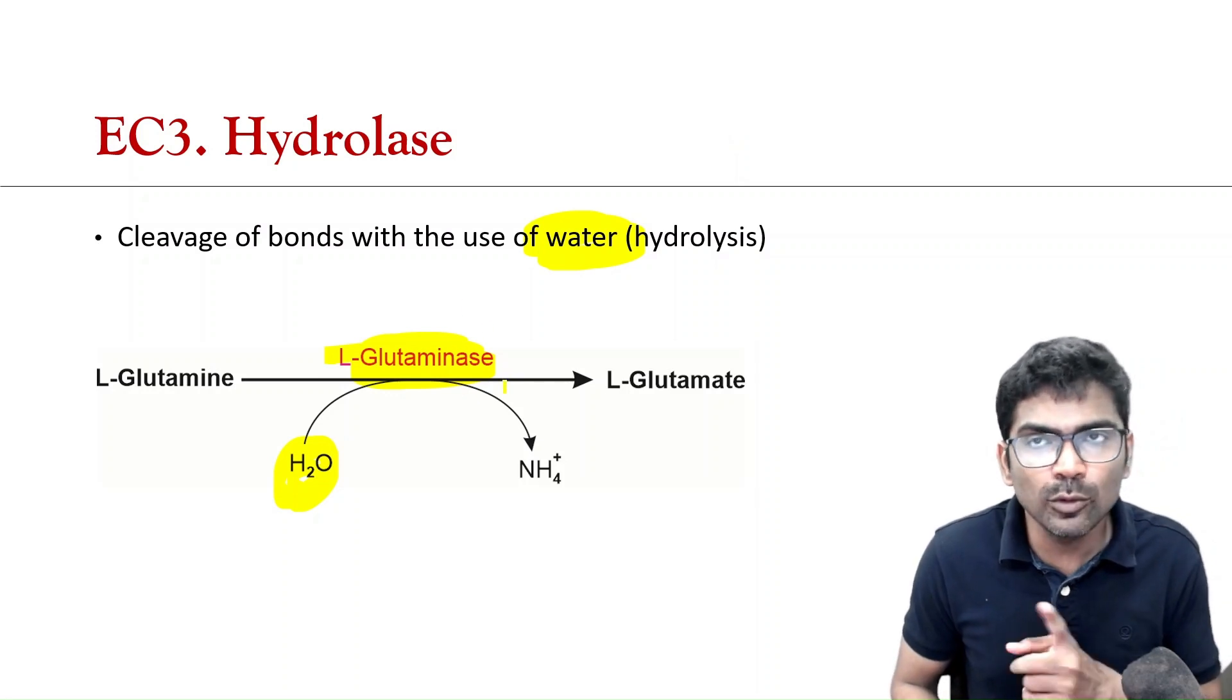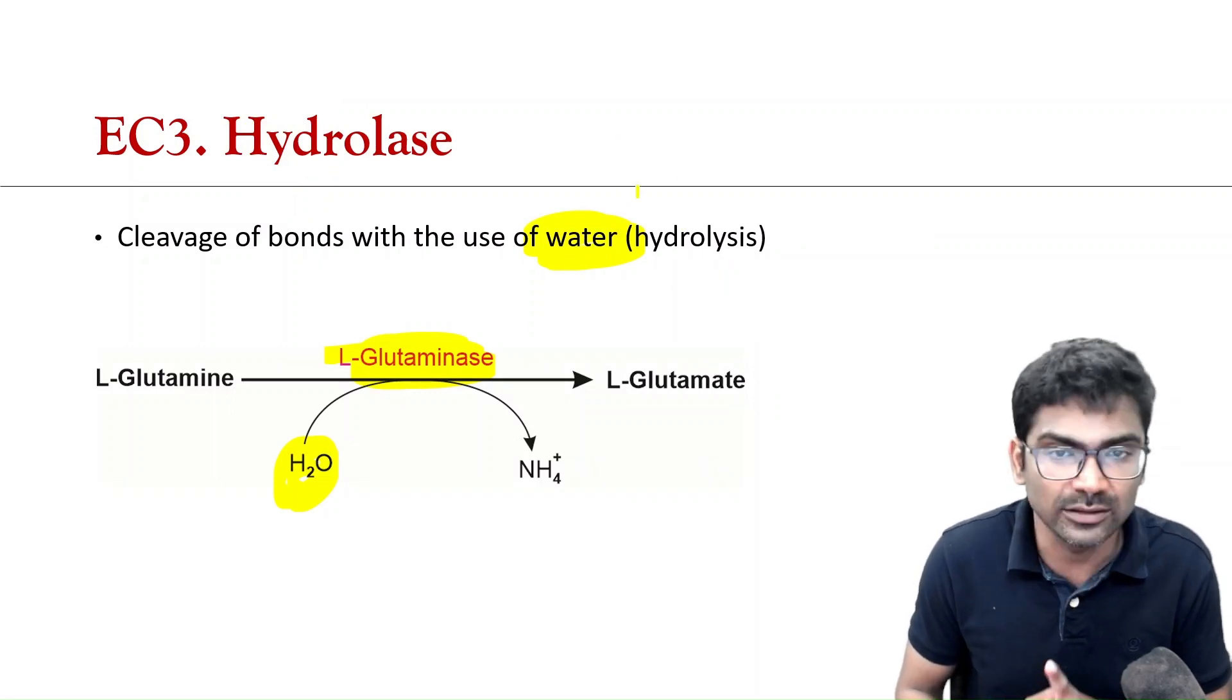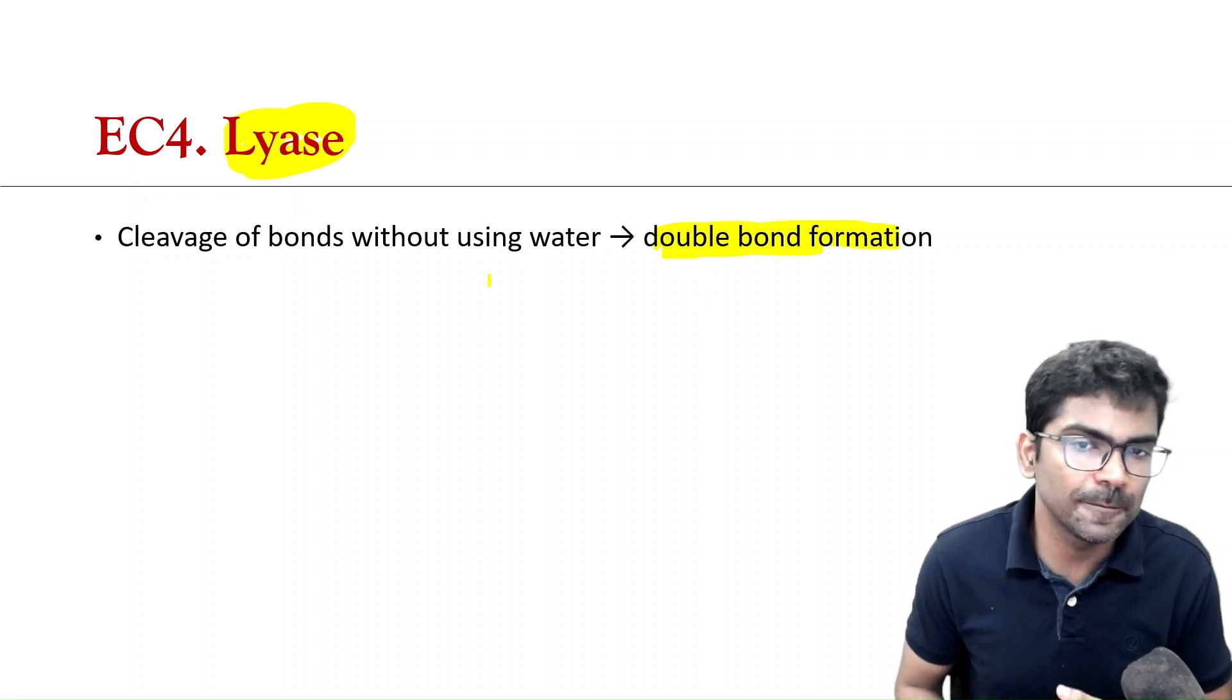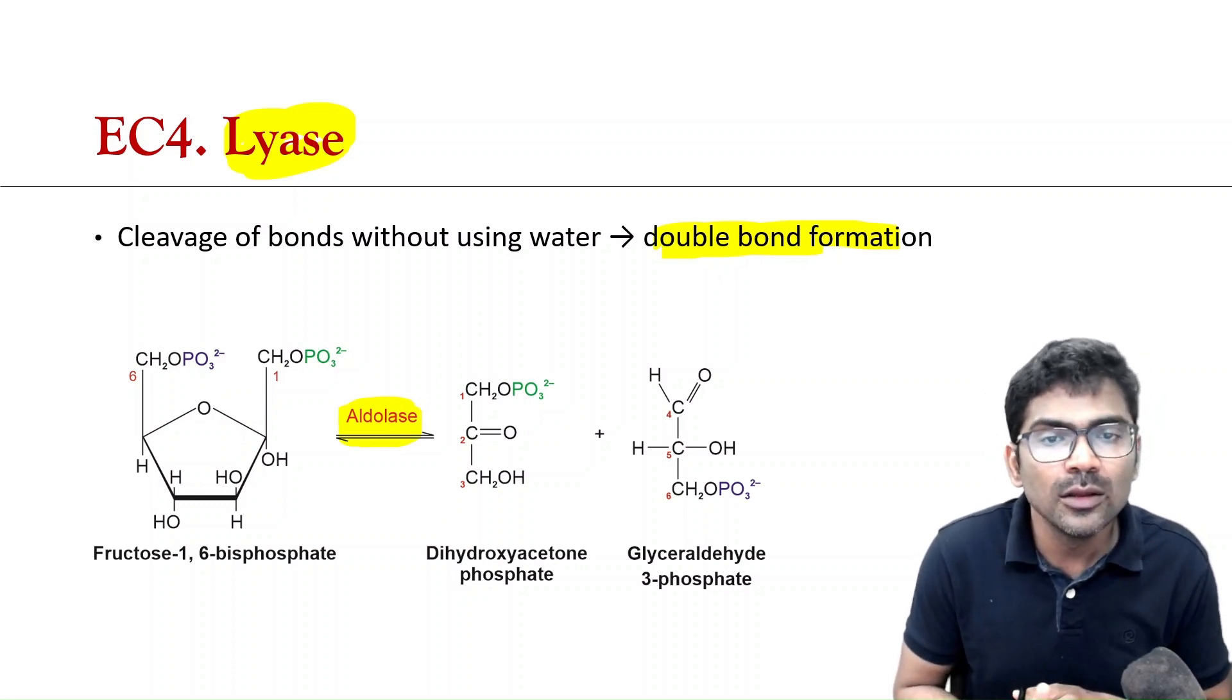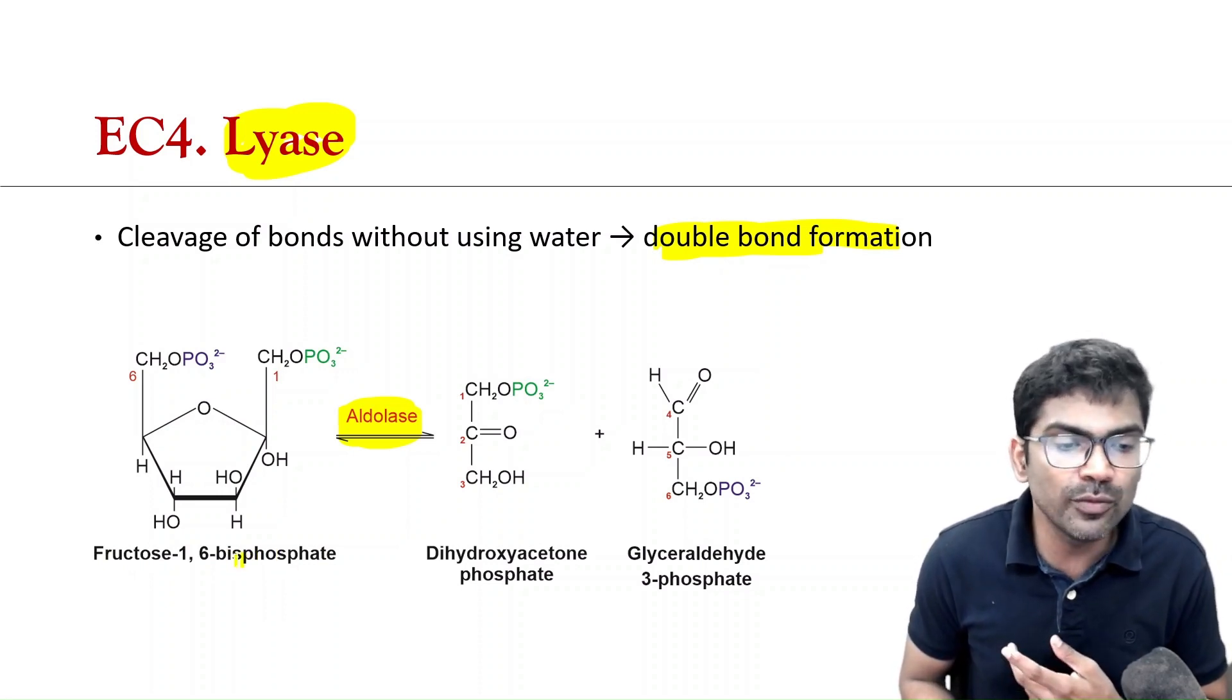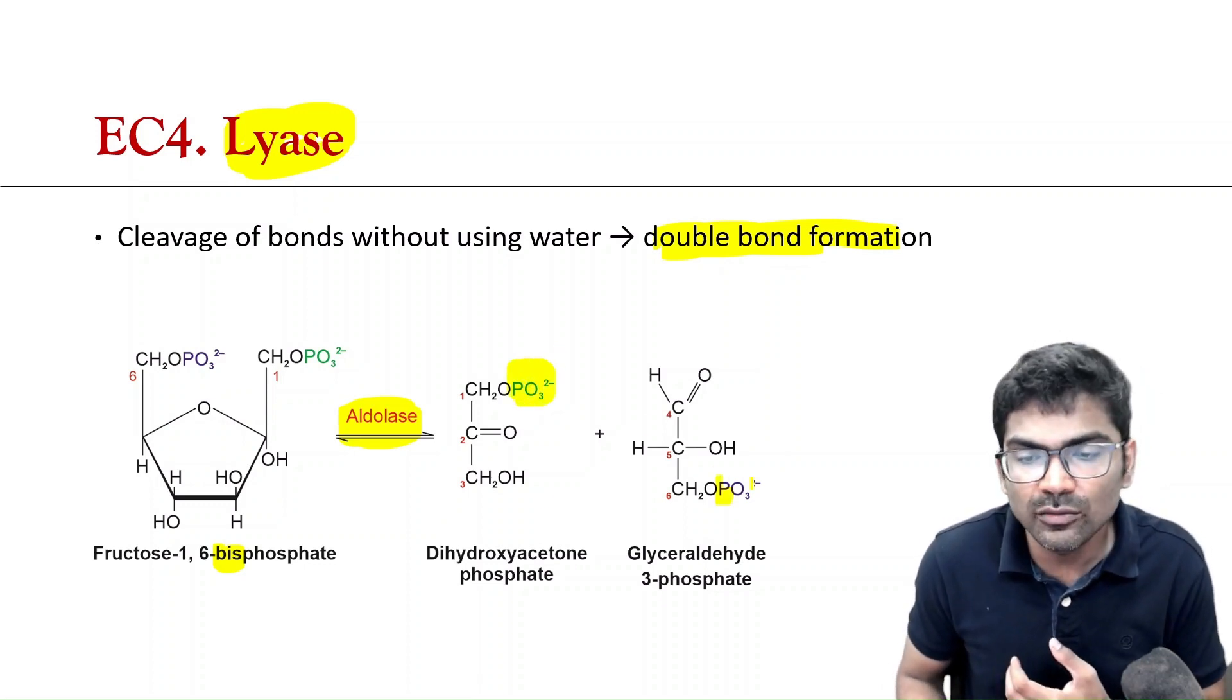So, what is the next class? O-T-H-L. So, here L stands for lyase. So, in hydrolase, we broke the bond with the help of water. So, in lyase, there is cleavage of bond without using water. Also, there is formation of double bond. Look at one example. Aldolase is an enzyme of glycolysis. So, it is going to break the bond without the help of water. Here, this 6-carbon compound, fructose 1,6-bisphosphate, which has 2 phosphates, is broken into 2, 3-carbon compounds and each compound has only 1 phosphate, monophosphate.